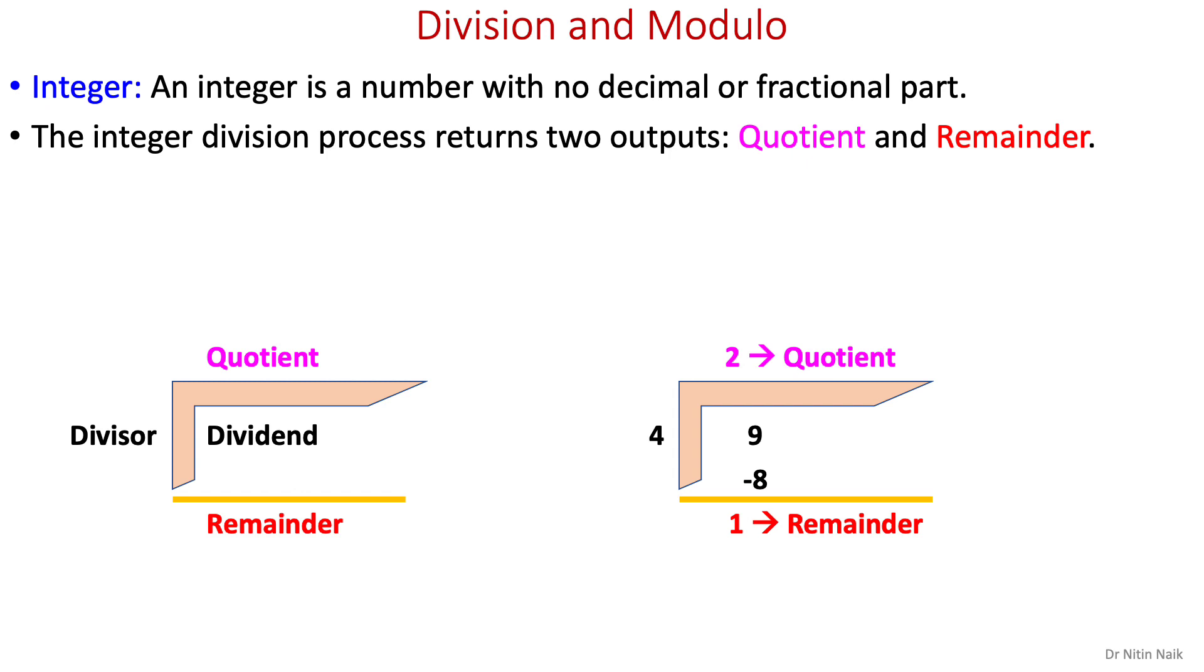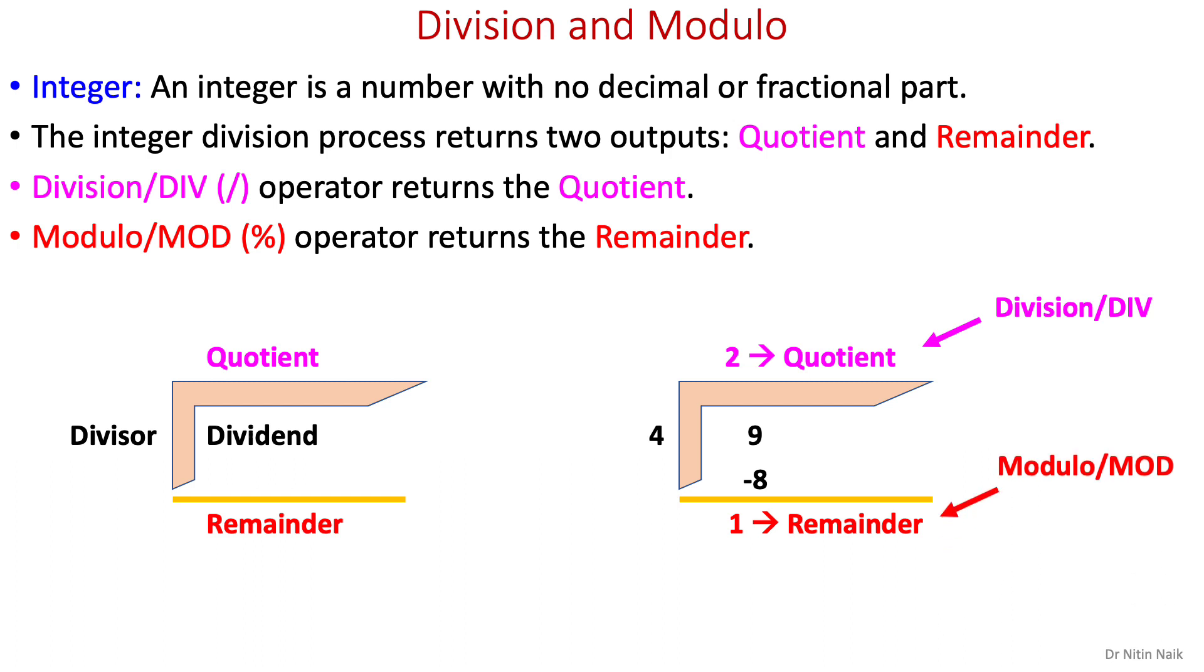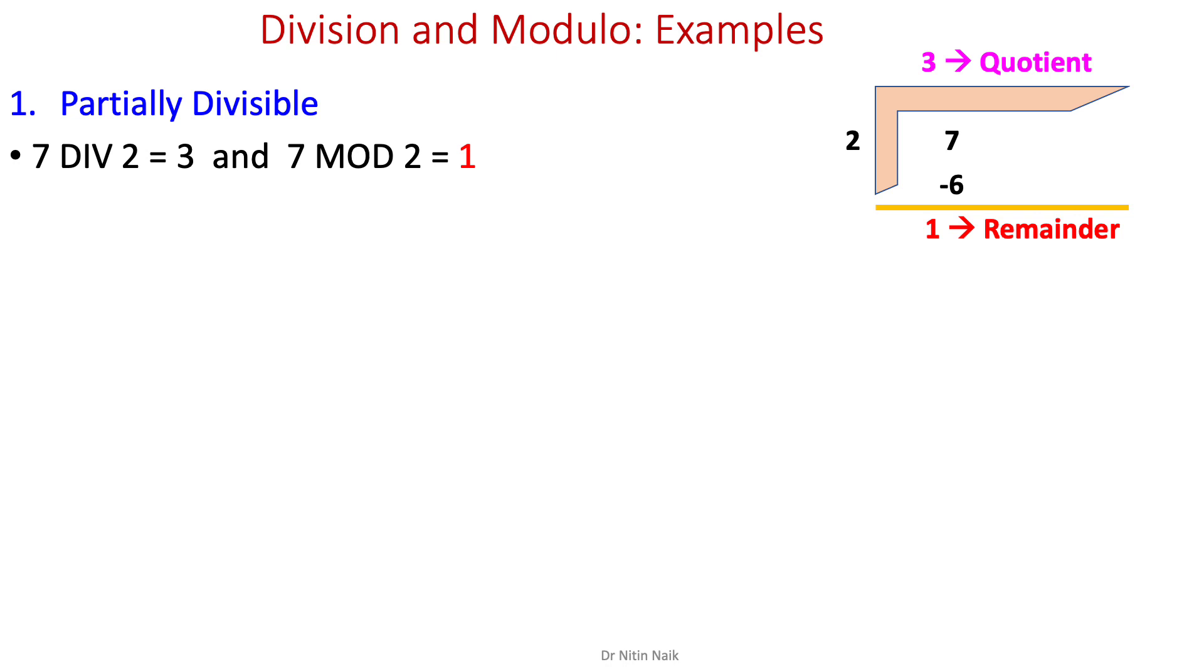The integer division process returns two outputs: quotient and remainder. In computing, the division operator returns the quotient and the modulo operator returns the remainder. Let's look at different conditions of division and modulo in some examples. Here our focus is only modulo.